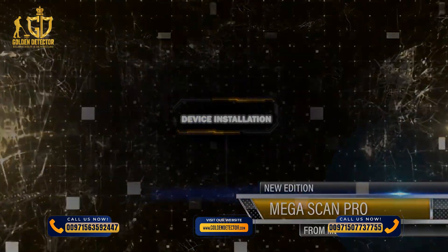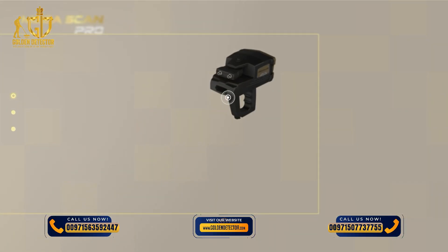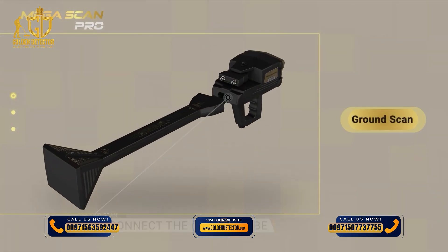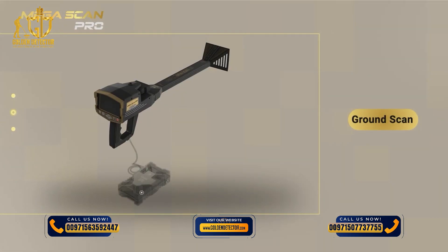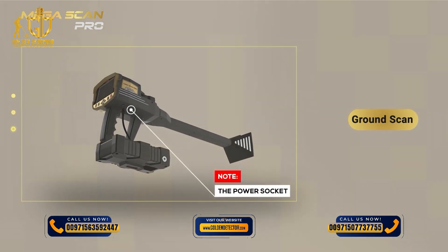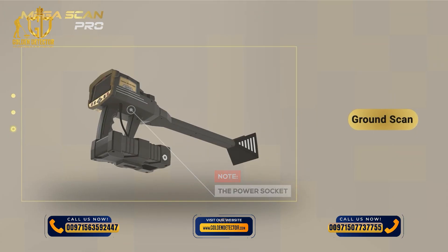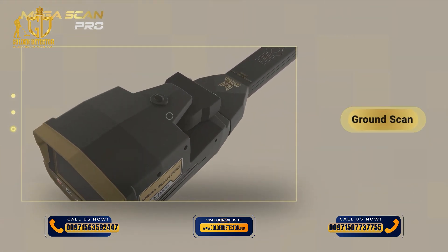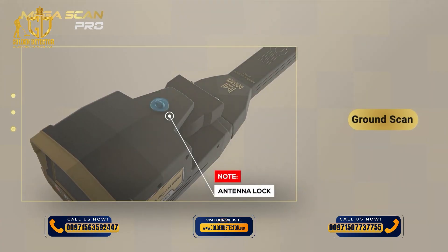Device Installation. Connect the VST probe. Use the power socket on the bottom of the main unit to connect the battery. Note: ensure that the antenna unit is locked and closed so that the unit is stable during use.